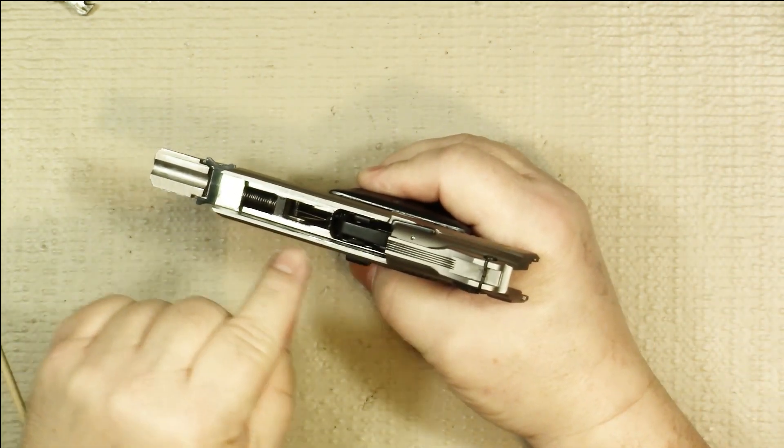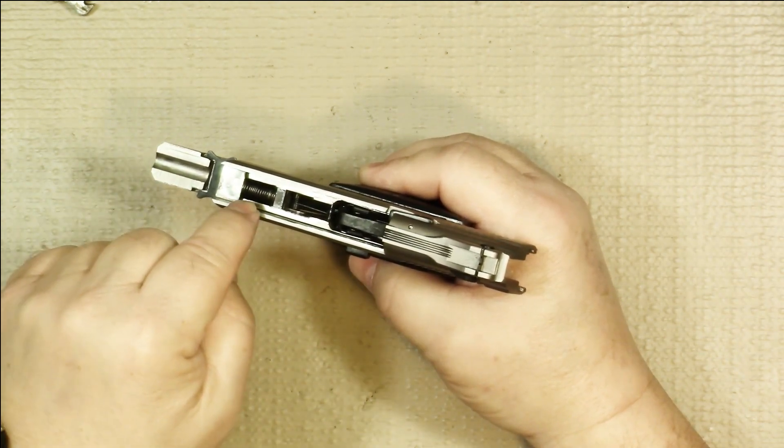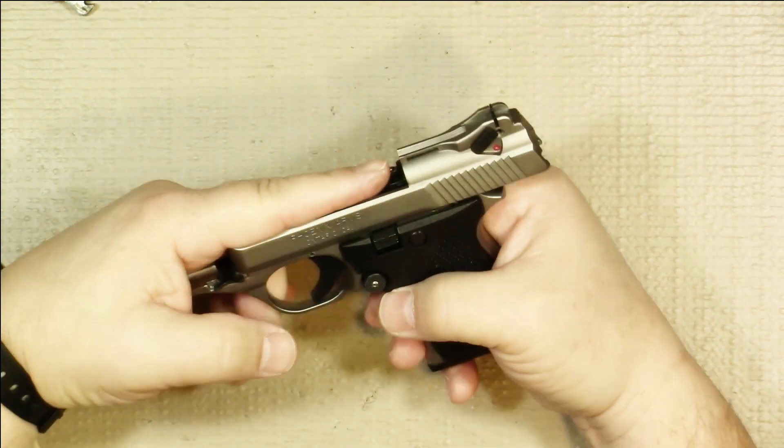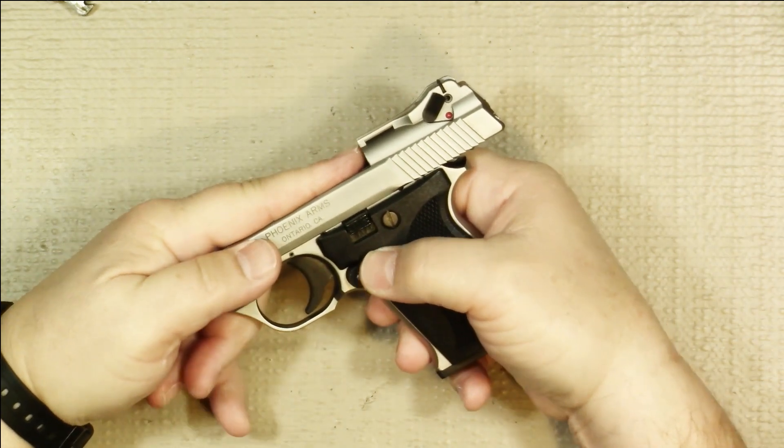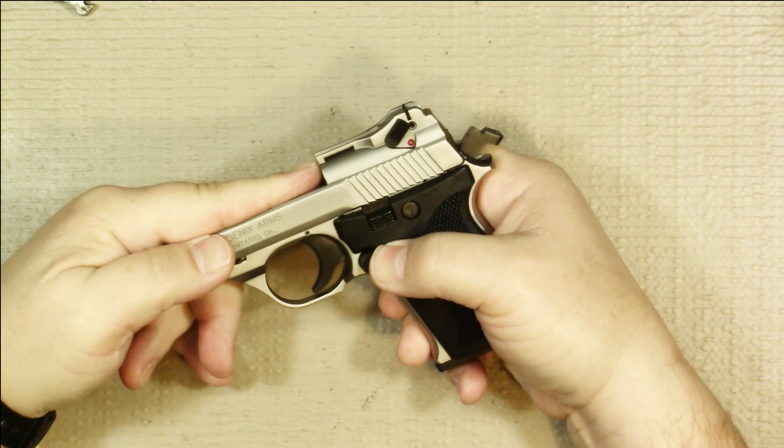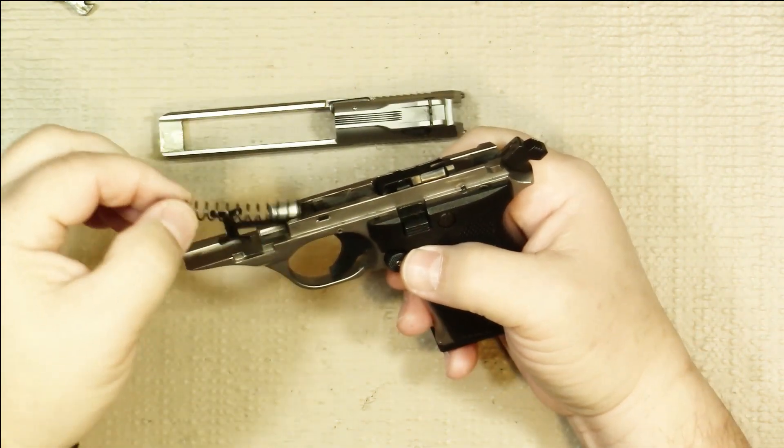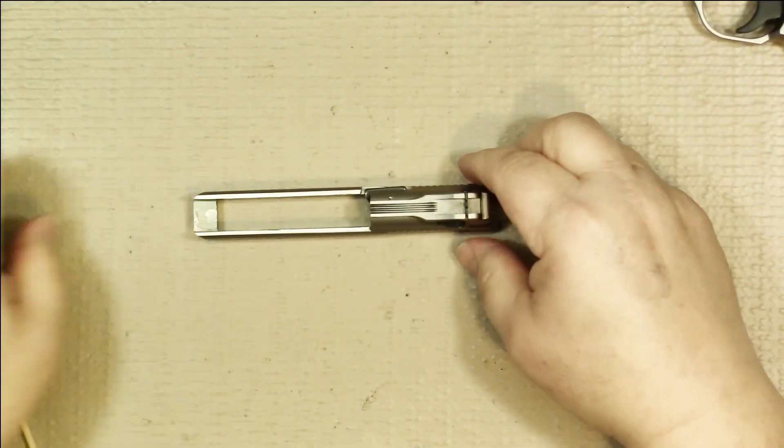Now when you go to move the slide forward, when the compression is taken off of that spring, it'll try to get away from you. So you want to make sure you put your finger over the opening and then you can pull down on the slide lock safety and you can slide the slide forward and off. Here's our lock piece and spring and now we can take a look at the slide itself.